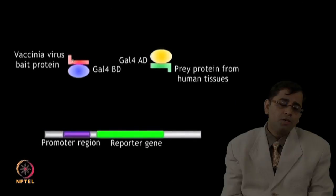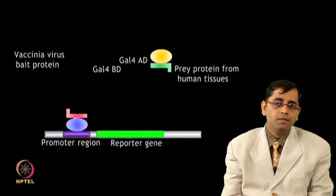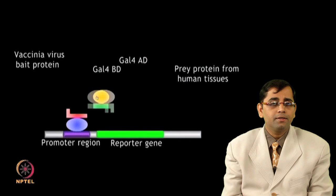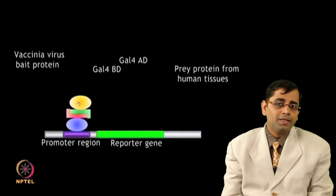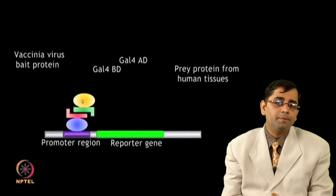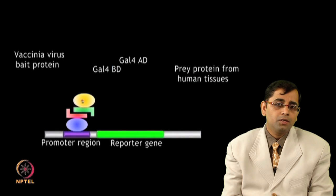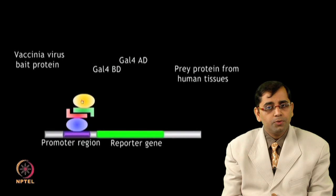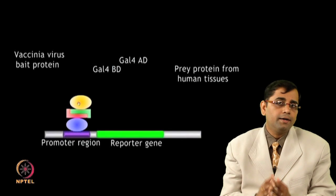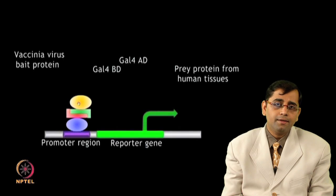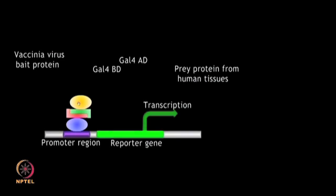The conventional methods of studying protein interactions are yeast two-hybrid and immunoprecipitation. Here is an example of the yeast two-hybrid method, where a protein interaction between two proteins is detected through an expression-based signal in the yeast two-hybrid system.